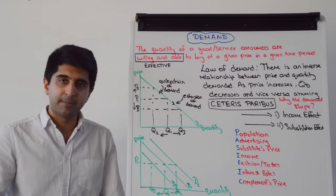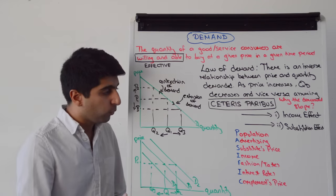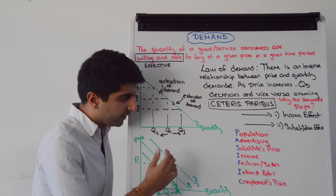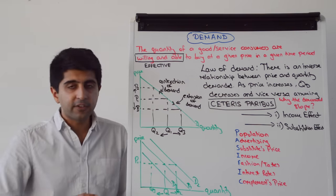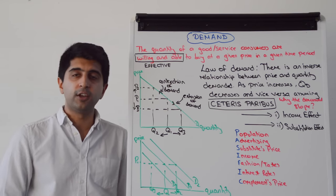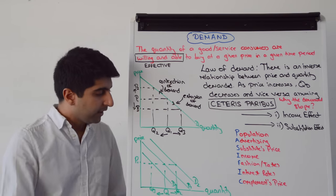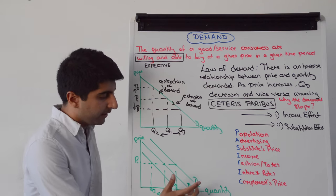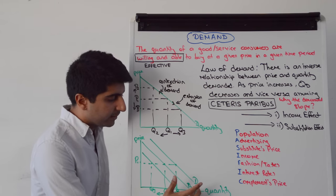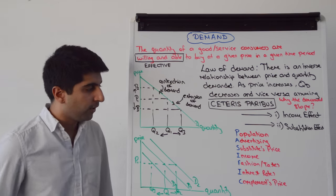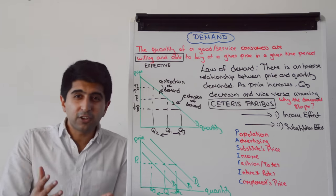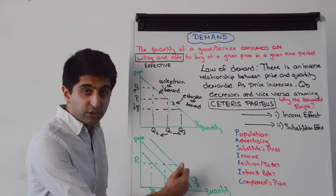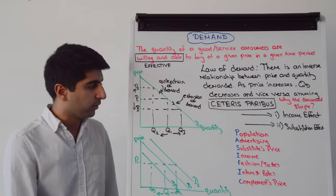Fashion and taste clearly affect demand — our willingness to buy. If fashion moves towards a certain good or service, we demand more of it at the same price, shifting the demand curve to the right from D1 to D2. Whereas if fashion moves away from the good, the demand curve shifts to the left from D1 to D3.